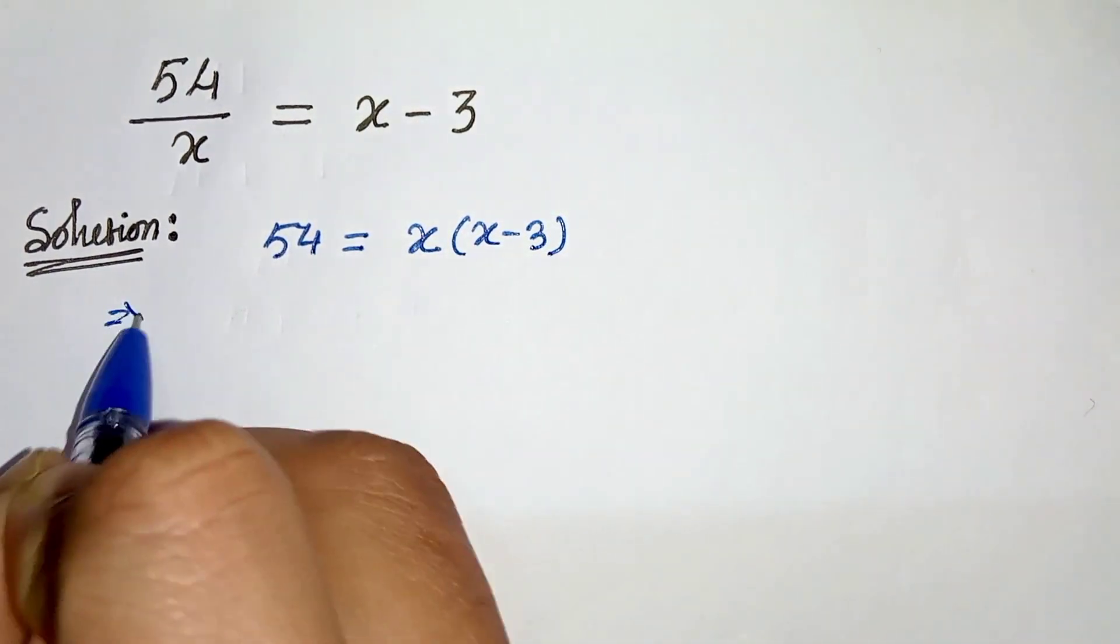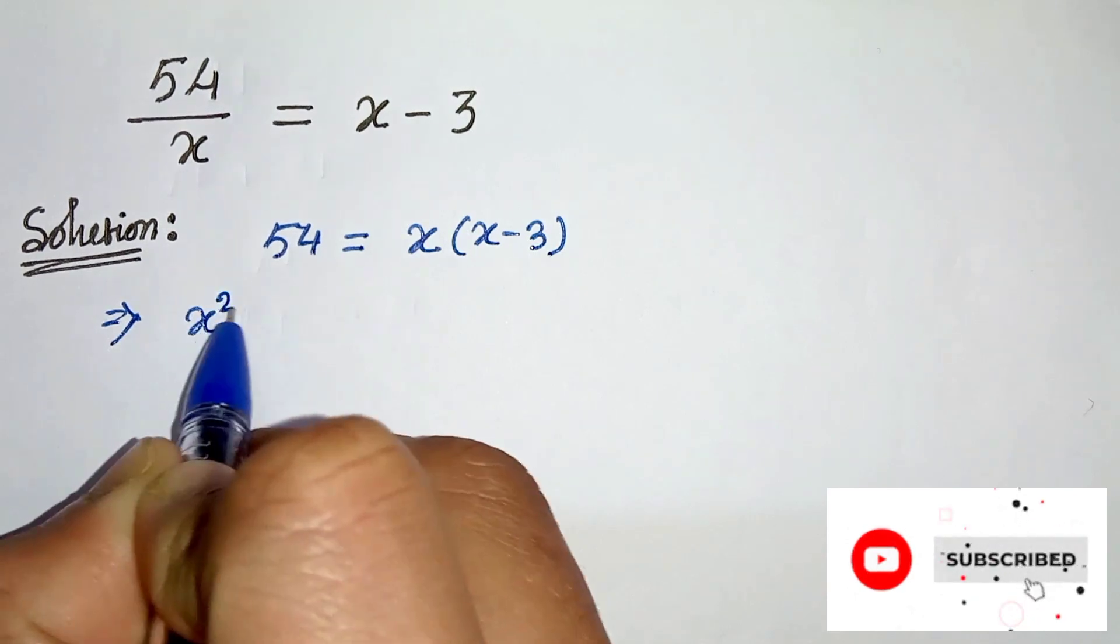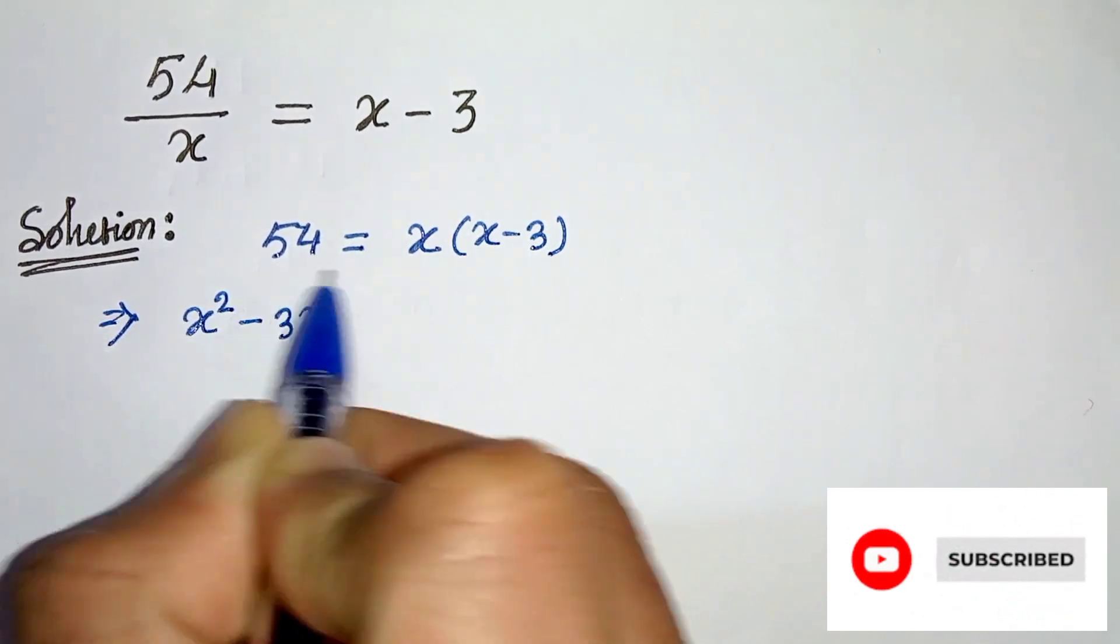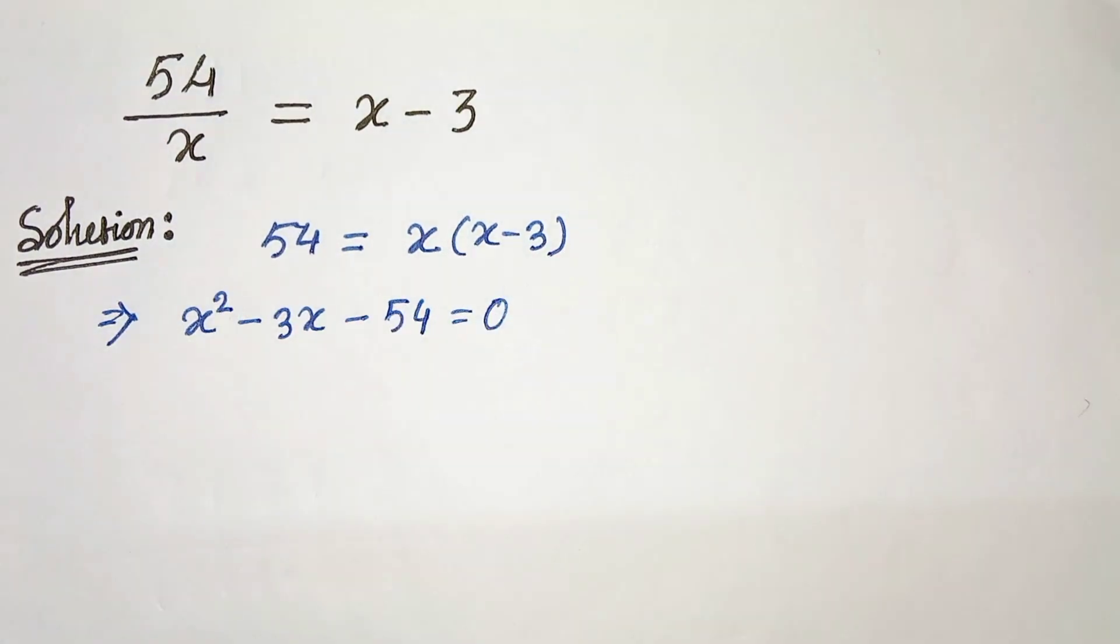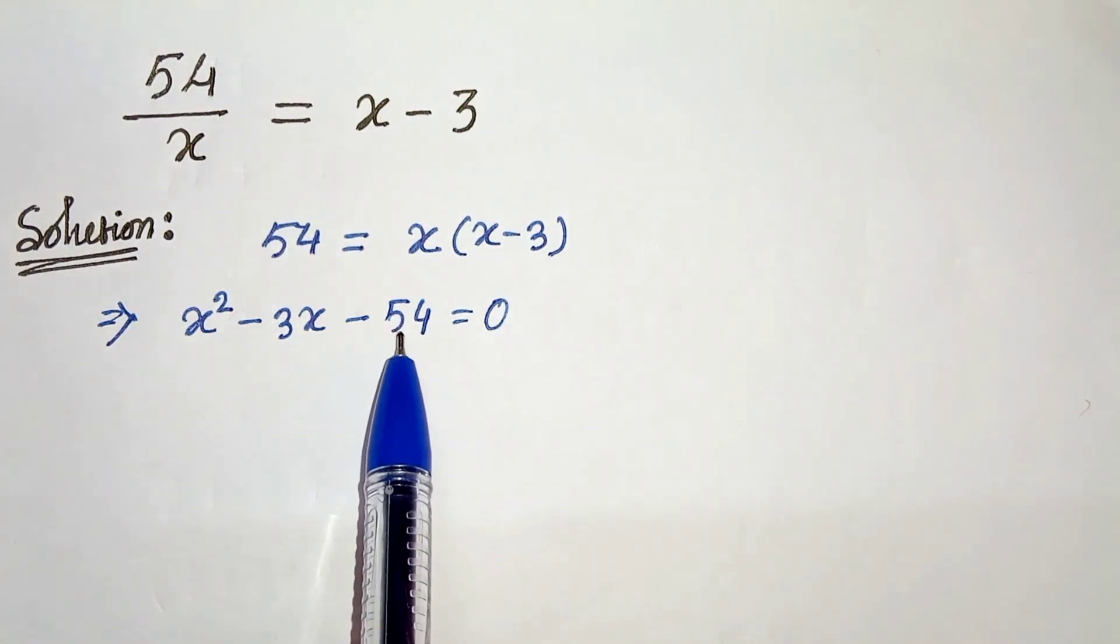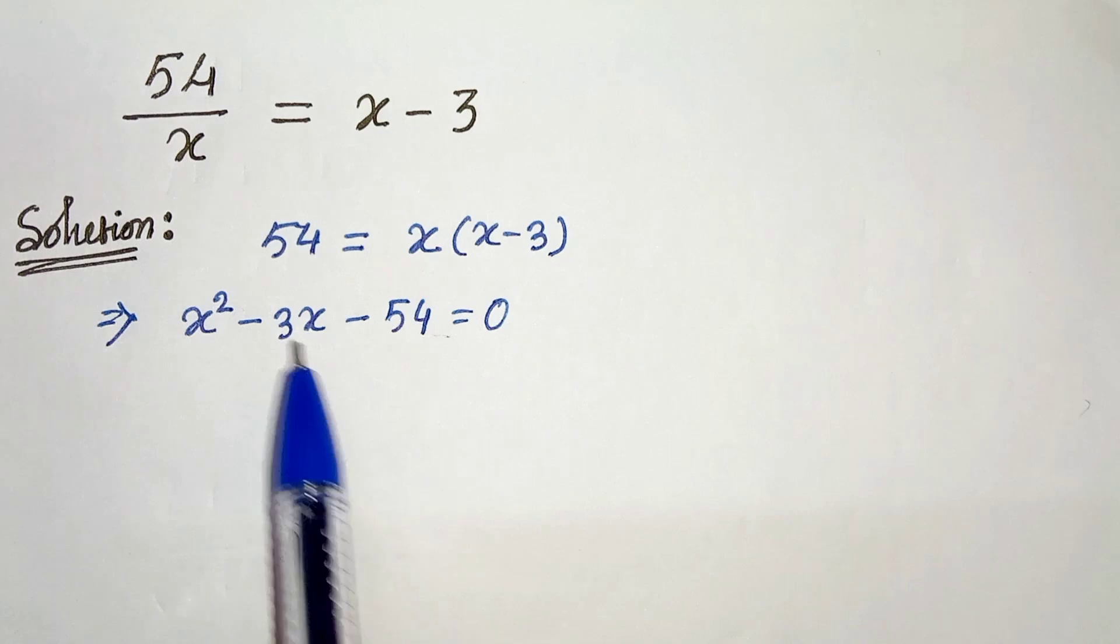In the next step, we can write x times x is x squared minus 3x minus 54 equals 0. So now we have product as minus 54 and sum as minus 3.